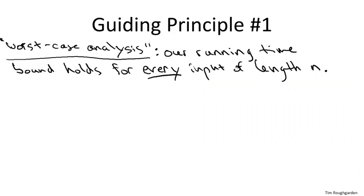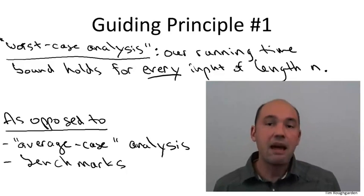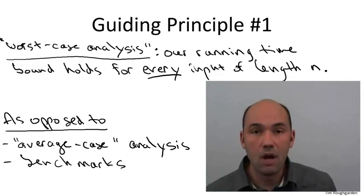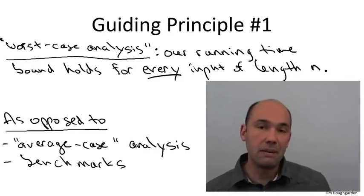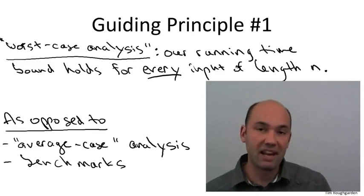Well, two other methods of analysis which do have their place, although we won't really discuss them in this course, are average case analysis and also the use of a set of pre-specified benchmarks. By average case analysis, I mean you analyze the average running time of an algorithm under some assumption about the relative frequencies of different inputs. So, for example, in the sorting problem, one thing you could do, although it's not what we did here, you could assume that every possible input array is equally likely and then analyze the average running time of an algorithm.